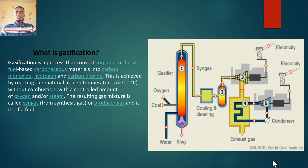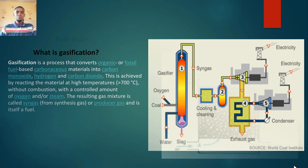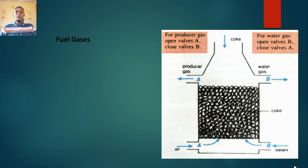Syngas, also called producer gas, can be used as a fuel on its own because it contains carbon monoxide and hydrogen. Here is a simple setup showing how this can be done — we're not going to use this complex setup right now. As you advance in chemistry you'll understand it better. So what are fuel gases?